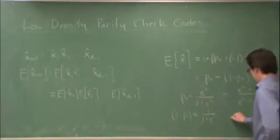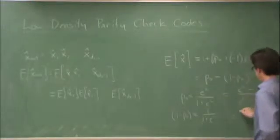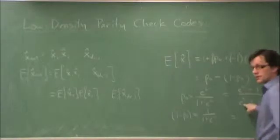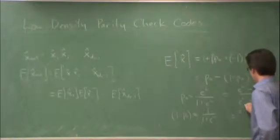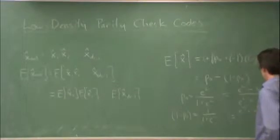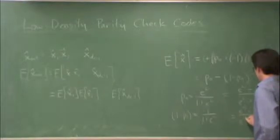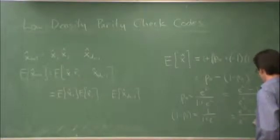What I'm going to do is take out e to the L over 2 on top and bottom. In that case, what I get is e to the L over 2 minus e to the minus L over 2 divided by e to the L over 2 plus e to the minus L over 2.